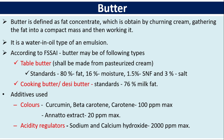Cooking butter or desi butter standards require 76% milk fat. Additives used in butter include colors such as curcumin and beta-carotene (usually up to 100 ppm), annatto extract (usually up to 20 ppm), and acidity regulators sodium and calcium hydroxide with a permitted limit of 2000 ppm.